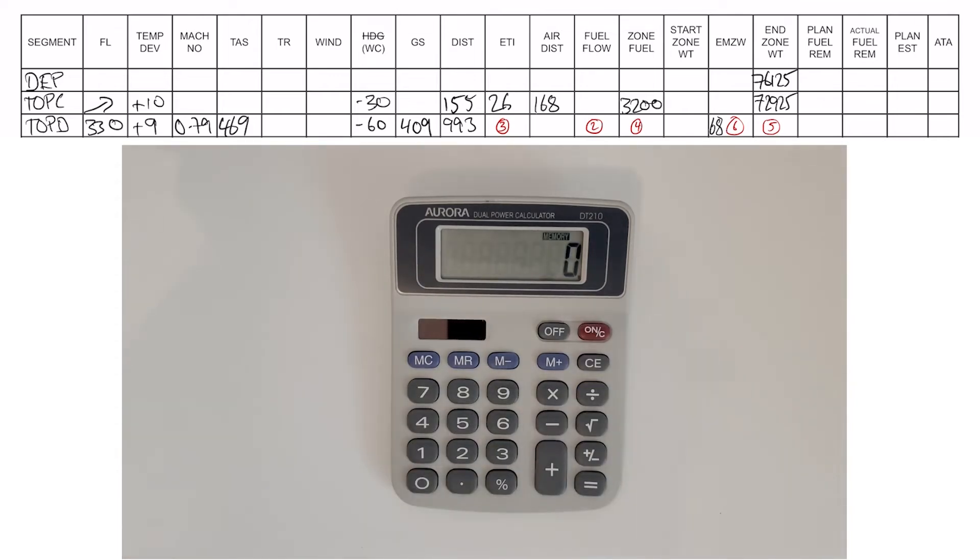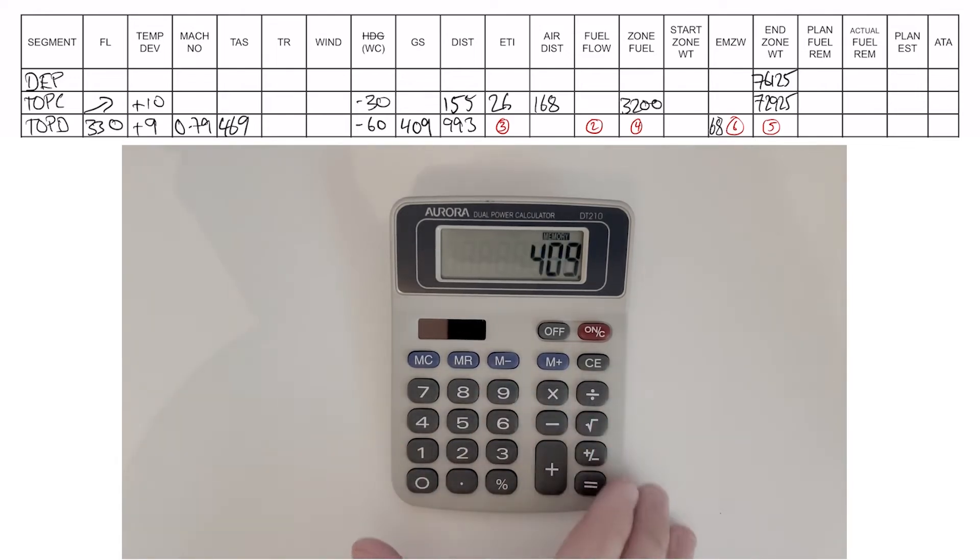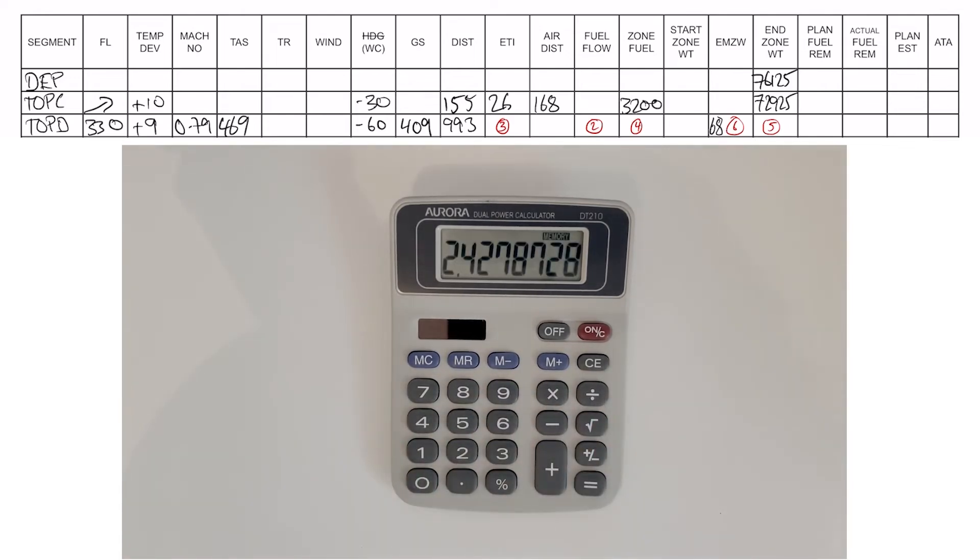Next is to work out the ETI. We'll do it on the calculator and try not to round any numbers. The distance of 993 divided by the ground speed of 409 gives us an ETI of 2.4278 hours. Whenever I get an ETI on the calculator, I do what I call the rubber band. I'll quickly convert it to minutes by multiplying by 60, write that number down, and then immediately take it back to hours by dividing by 60.